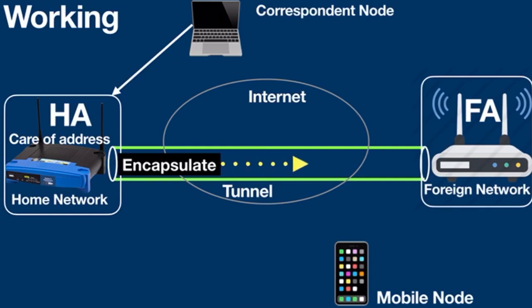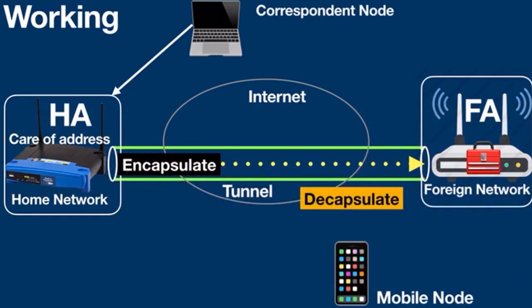The home agent sends the encapsulated packets through the tunnel to the foreign agent. The foreign agent on the other side of the tunnel receives the data packets, decapsulates them, and sends them to the mobile node. The mobile node, in response to the received data packets, sends a reply to the foreign agent, and the foreign agent directly sends the reply to the correspondent node. This is how Mobile IP operates.